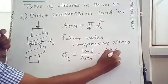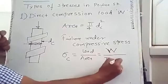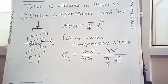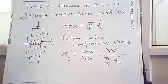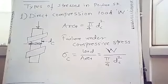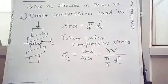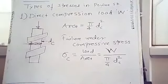So sigma c equals W divided by pi by 4 times dc squared. This is the first equation — direct compressive stress.